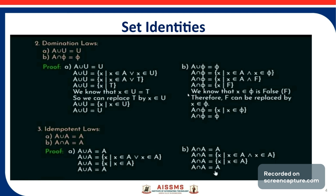The second domination law is A intersection φ equals φ. A intersection φ is the set of X such that X belongs to A and X belongs to φ. Since φ is the empty set, X belongs to φ is false, so we replace it by F. We know A and F equals F. So F can be replaced by X belongs to φ, giving A intersection φ equals the set of X such that X belongs to φ, which is nothing but φ.